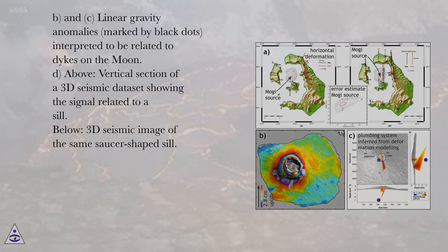(d) Above: vertical section of a 3D seismic dataset showing the signal related to a sill. Below: 3D seismic image of the same saucer-shaped sill. (e) Volcanic plumbing system of the Toba Caldera inferred from seismic tomography.